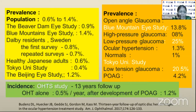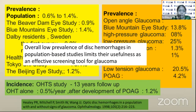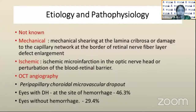Looking at the incidence of disc hemorrhage, an older study with 13 years of follow-up shows that if ocular hypertension is present alone, the probability of disc hemorrhage is 0.5% per year. But after conversion to primary open-angle glaucoma, the incidence is 1.2%. Overall, the low prevalence of disc hemorrhage in population-based studies limits its usefulness as a screening tool for glaucoma.